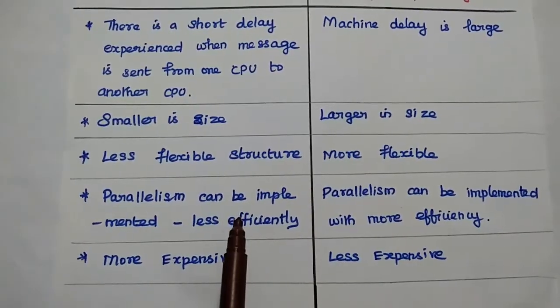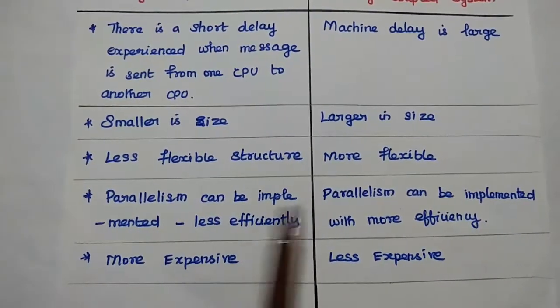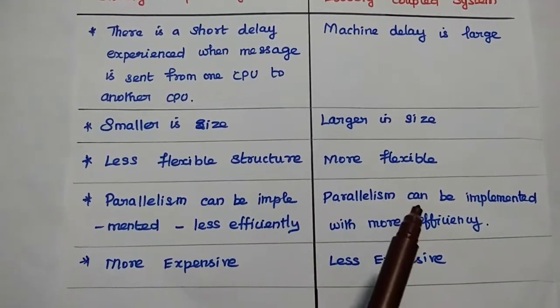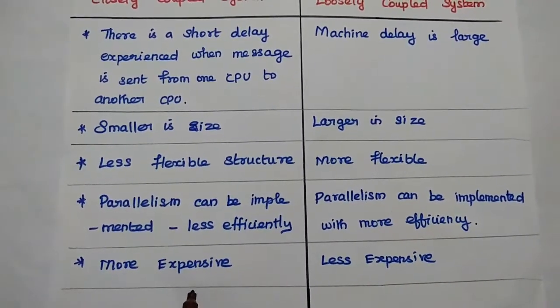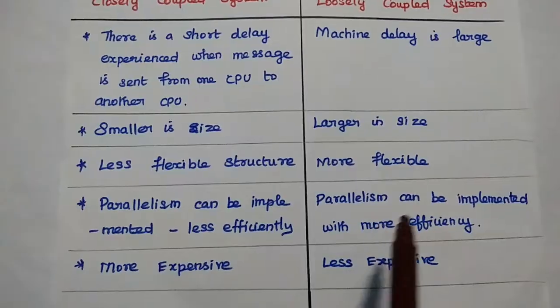Parallelism can be implemented with less efficiency. Here the parallelism can be implemented with more efficiency. It is more expensive, this one is less expensive.